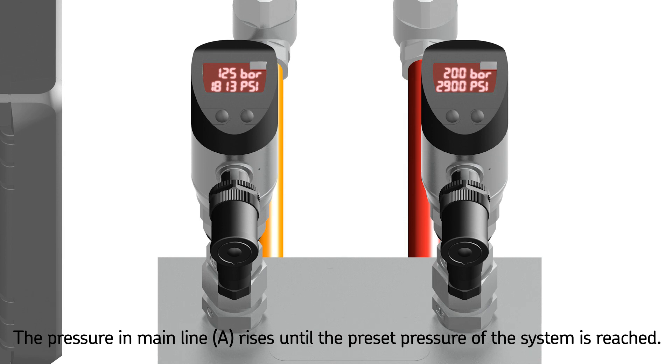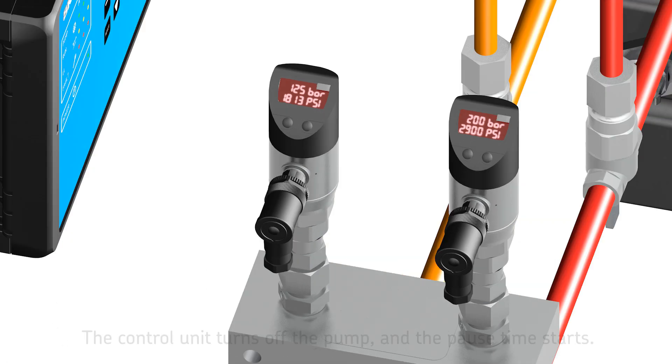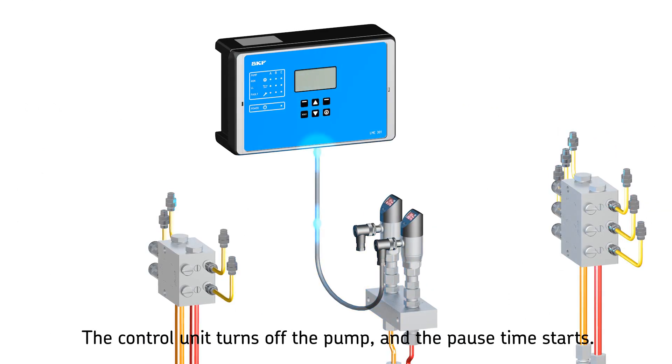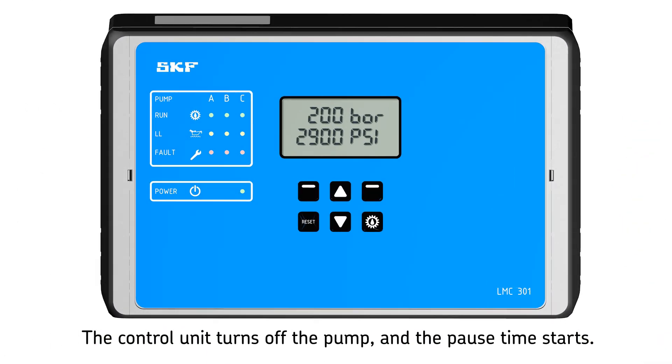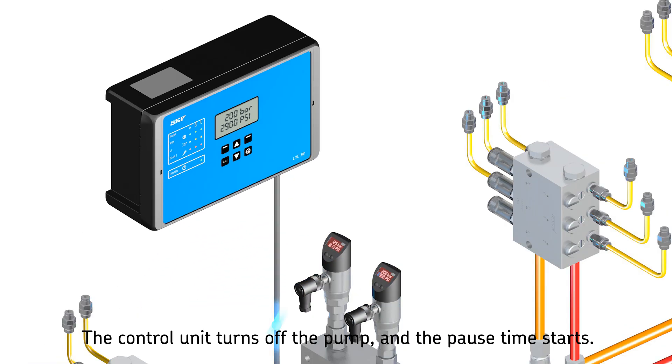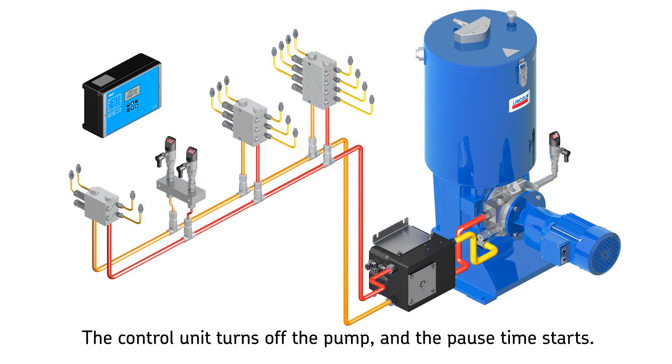Pressure rises until reaching the preset level at the end-of-line pressure switch, mounted in the main line prior to the last metering device. The pressure switch signals an electric pulse to the control unit, which turns the pump off and signals the changeover valve to relieve main lines A and B, starting the pause time.